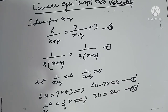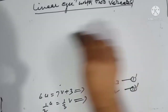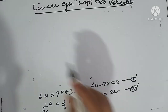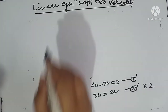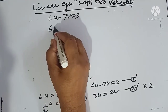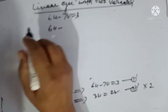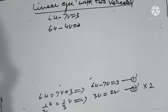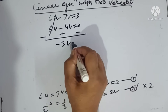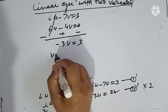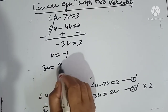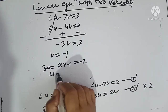We multiply equation 2 dash by 2 to get 6u minus 4v equals 0, then subtract from equation 1 dash: 6u minus 7v equals 3. Subtracting and changing signs, we get minus 3v equals 3, therefore v equals minus 1. Substituting back: 3u equals 2 times minus 1 equals minus 2, so u equals minus 2 upon 3.